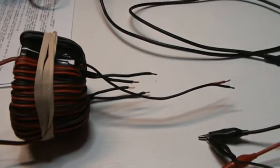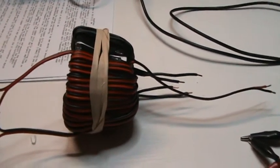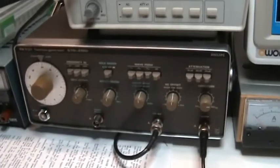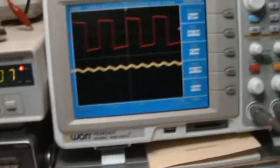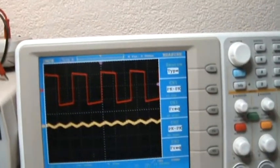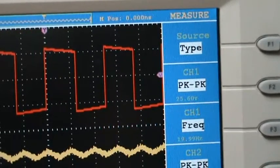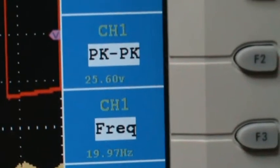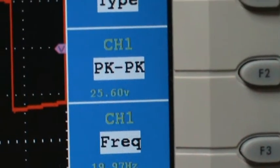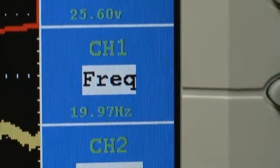And I want to make some measurements now, like being suggested on the forum. I have set my function generator to square wave. I cannot adjust the duty cycle so it's 50% duty cycle. At 25 volts peak to peak and the frequency is almost 20 hertz.